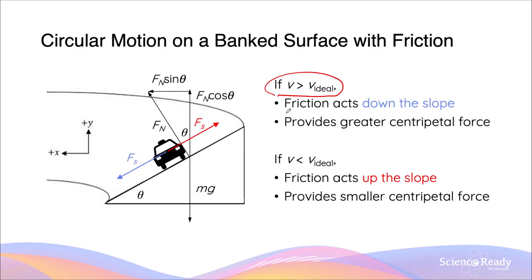When this happens, the static friction between the slope or the banked surface and the tyres of the vehicle will act down the slope. This is shown by the blue vector here. By having this static friction vector going down the slope, we'll have a greater centripetal force, and we'll have a look at this in a moment.